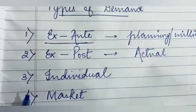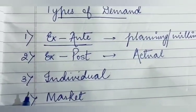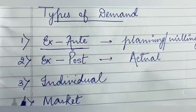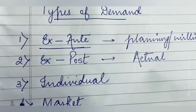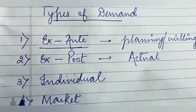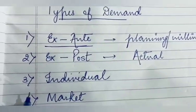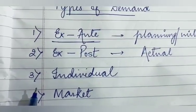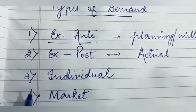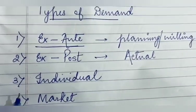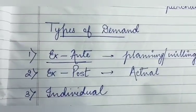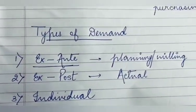Suppose mere society mein 100 flats hain. If I am talking about the demand of my family only, that will be individual demand. If I am talking about the demand of all the households in my society, that will be market demand. Another example: humare class mein 55 students hain. Agar mein kisi ek bachche ke demand ki baat karti hoon — individual demand. Agar mein sare bachche ke demand ki baat karti hoon — market demand. And ex post demand means what you are actually purchasing.